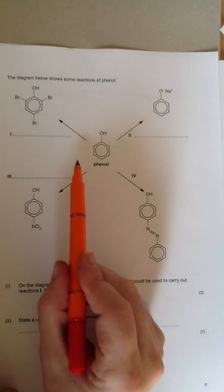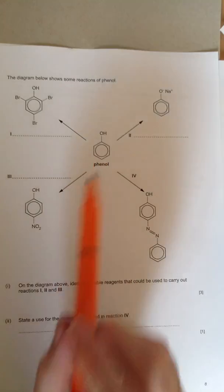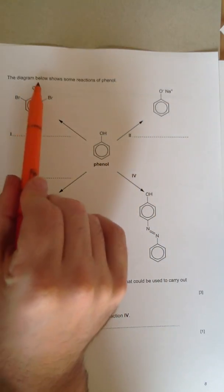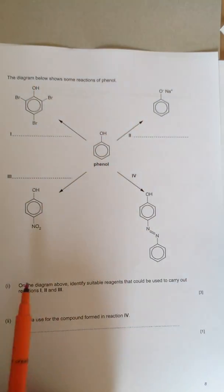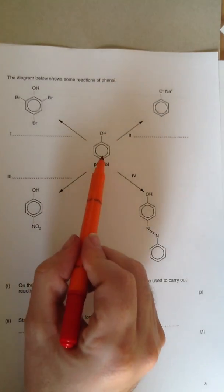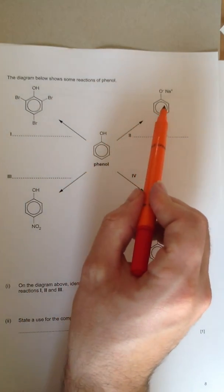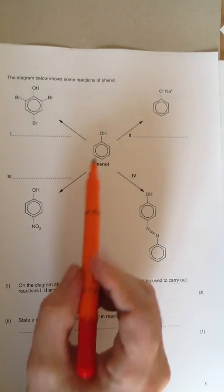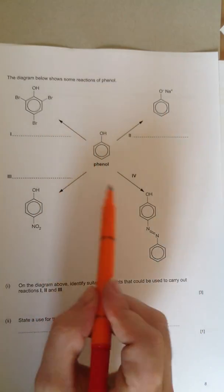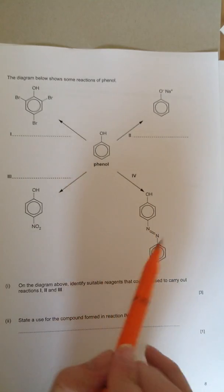This is a nice straightforward transformation question that comes up quite a lot, where it says the diagram below shows some reactions of phenol. We've got phenol going to tribromophenol, phenol going to sodium phenoxide, phenol going to nitrophenol, and then phenol going to this molecule over here.